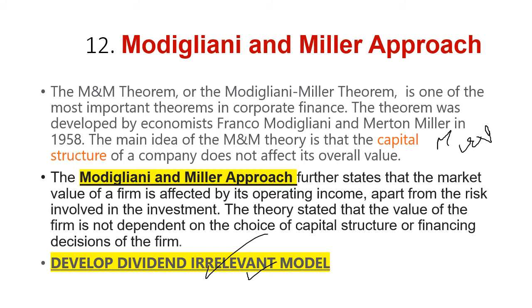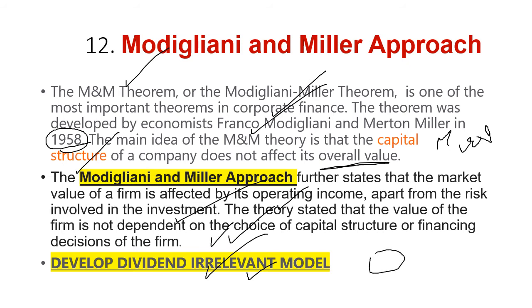The MM theory — Modigliani-Miller theorem — is one of the most important theorems in corporate finance. The theorem was developed by economists Franco Modigliani and Merton Miller in 1958. Their main idea was that capital structure does not affect overall value. The Modigliani-Miller approach states that the market value of a firm is affected by its operating income, apart from the risk involved in the investment. The value of the firm is not dependent on the choice of capital structure or financing decision.